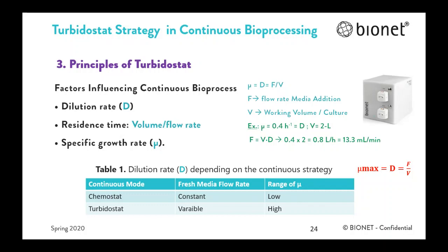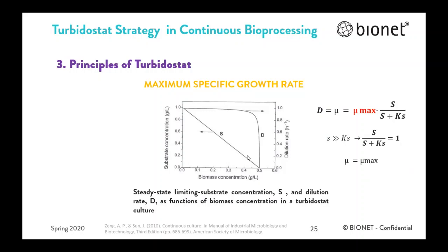The fresh media is introduced at a flow rate expressed in liters per hour, and the culture volume expressed in liters is kept constant by continuous removal of the culture. In the case of a chemostat process, the dilution rate and flow rate of media addition is kept constant during the whole process and usually the value selected is in the low range. But in the case of the turbidostat, it is changing during the process according to keeping the turbidity constant close to the highest value of the specific growth rate.